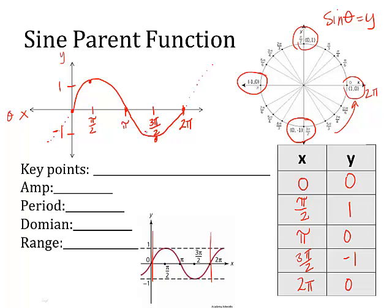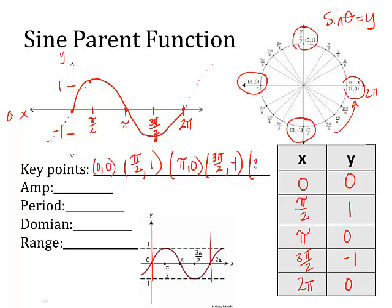As you graph the sine function, there are five key points you need to know — you have to have them memorized. The first one is (0, 0). The second one is at (π/2, 1). The third one is at (π, 0). The fourth one is at (3π/2, −1). And the last one is at (2π, 0).